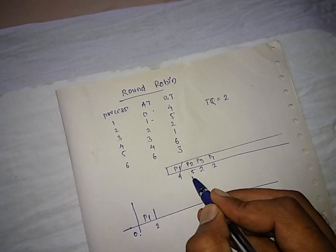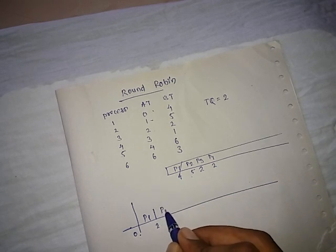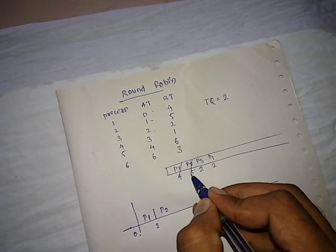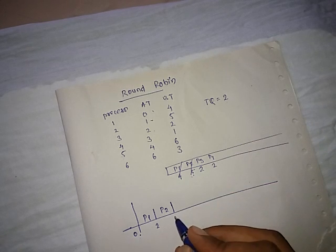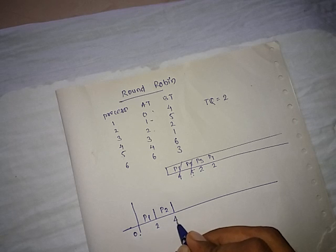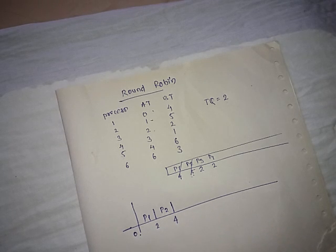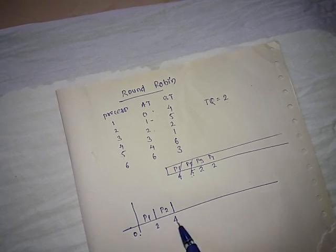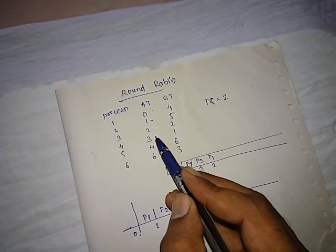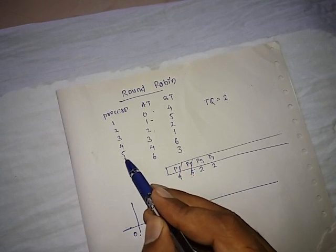Now the next process is P2, so schedule P2 here. Move P2 out of the queue and schedule it. The time quantum is 2, it requires 5, so remaining is 3. This is 2 plus 2 equals 4. Again, another process could have come from 2 to 4. Check that. Yes, there are some processes: P4 and P5.